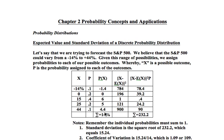So 14% is our expected mean. To come up with the standard deviation — and I'll talk more about the relevancy and importance of the standard deviation when I discuss the coefficient of variation — for the first case we simply take what we expect in the first scenario, the market to be down 14%, minus what the expected mean happens to be, take the difference and square it: 784.